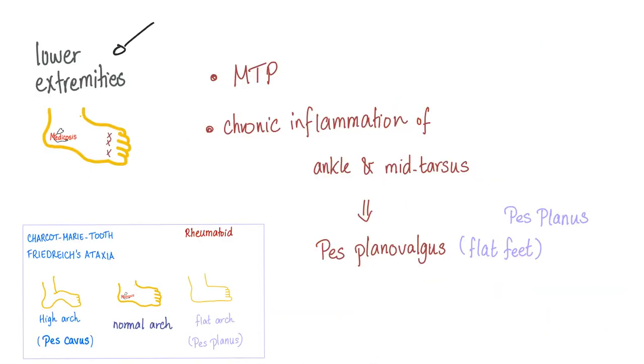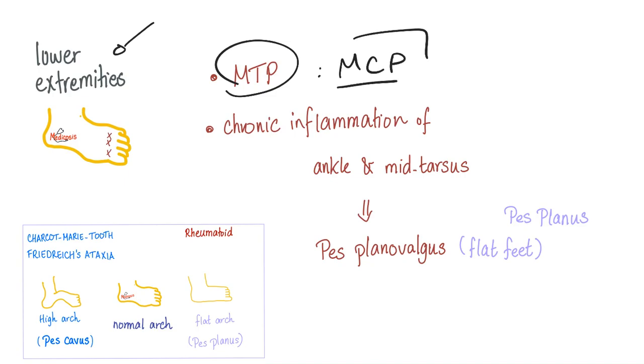In the lower extremities, you can get MTP joint involvement, which is equivalent to MCP in the upper extremities. There is chronic inflammation of the ankle and metatarsus, and you can develop pes planovalgus and pes planus.